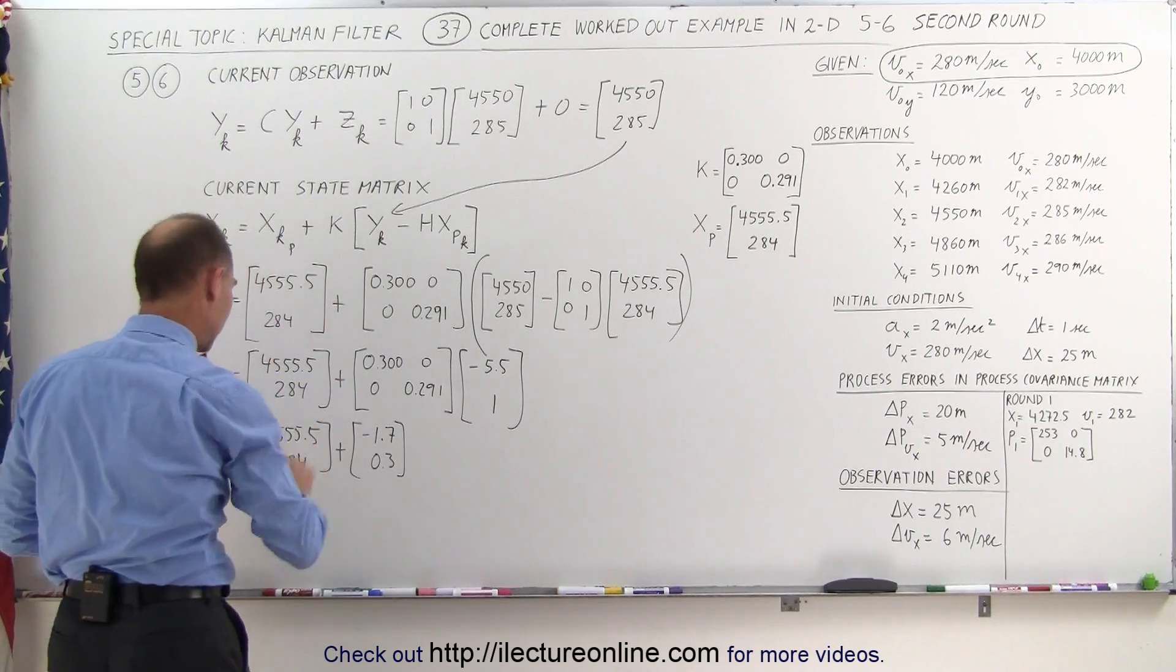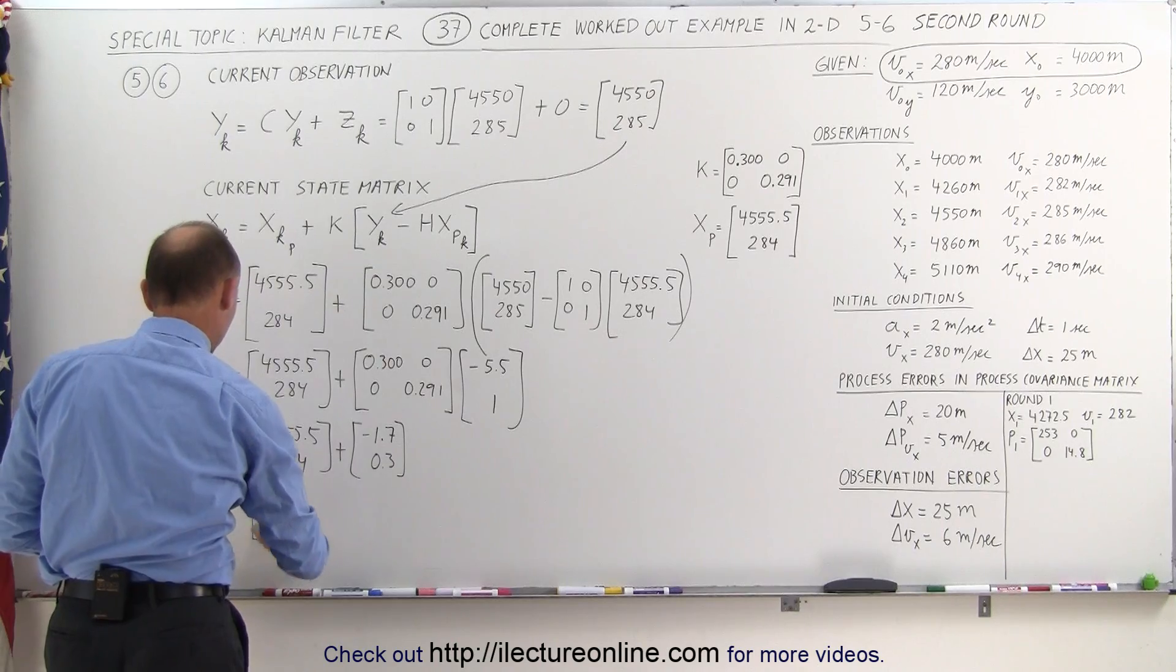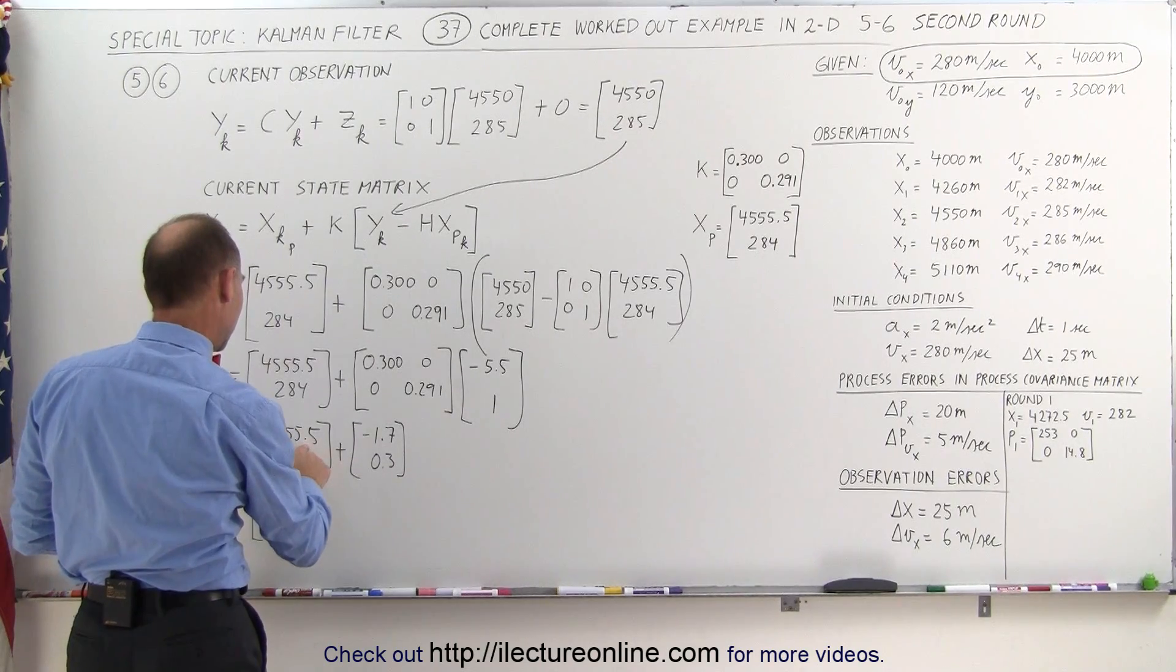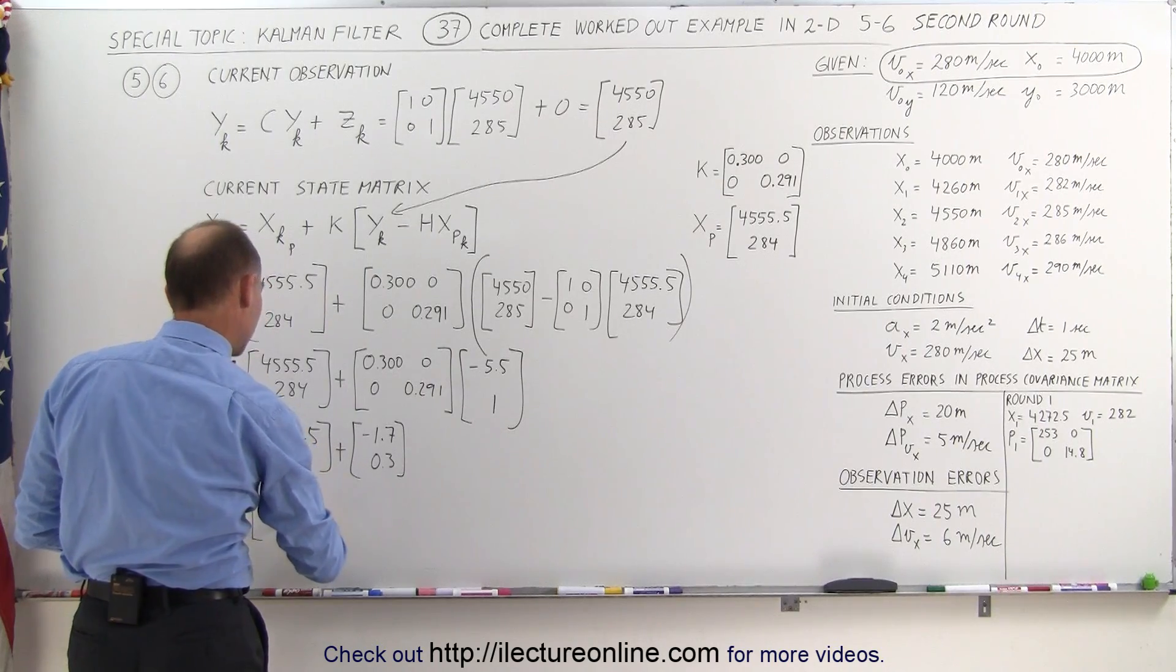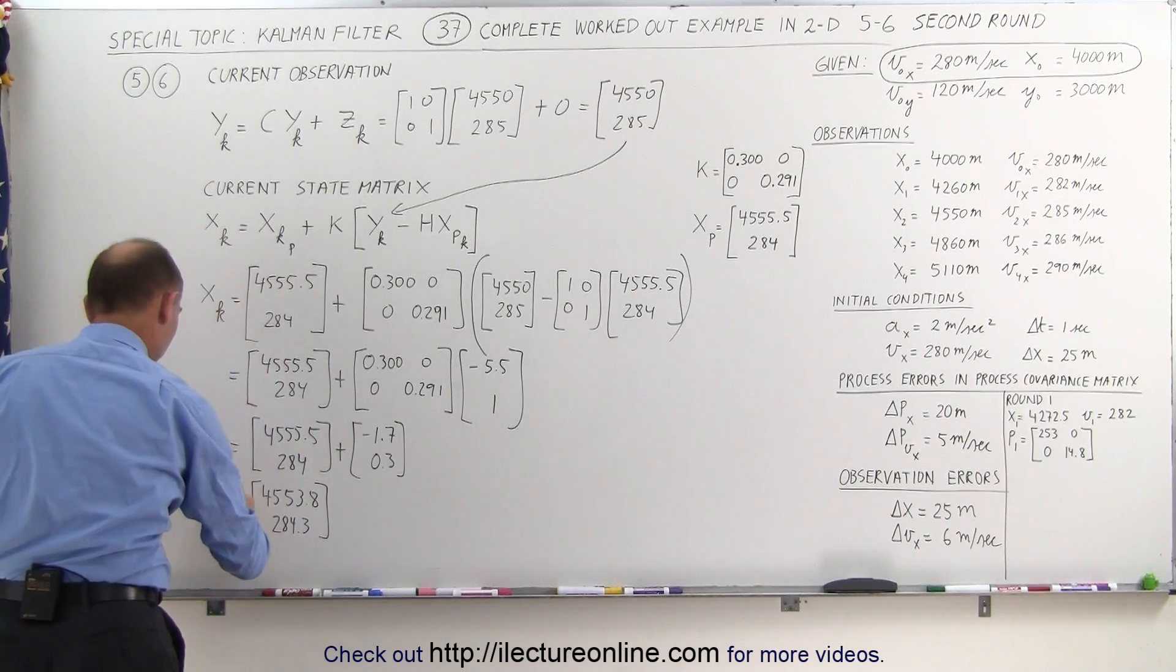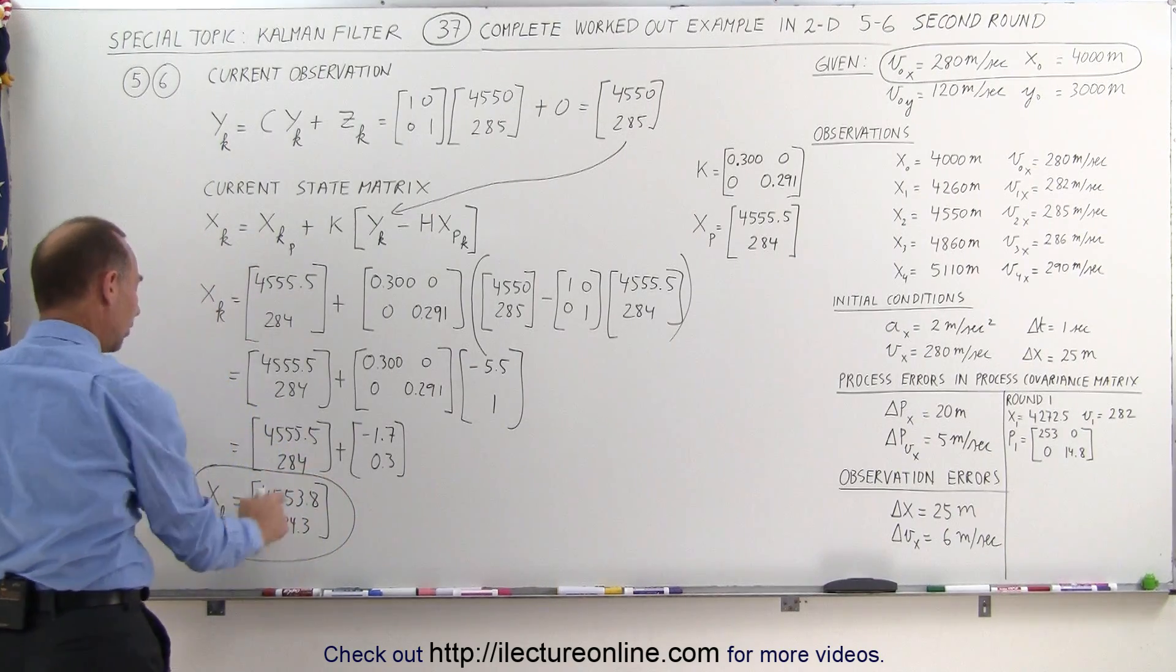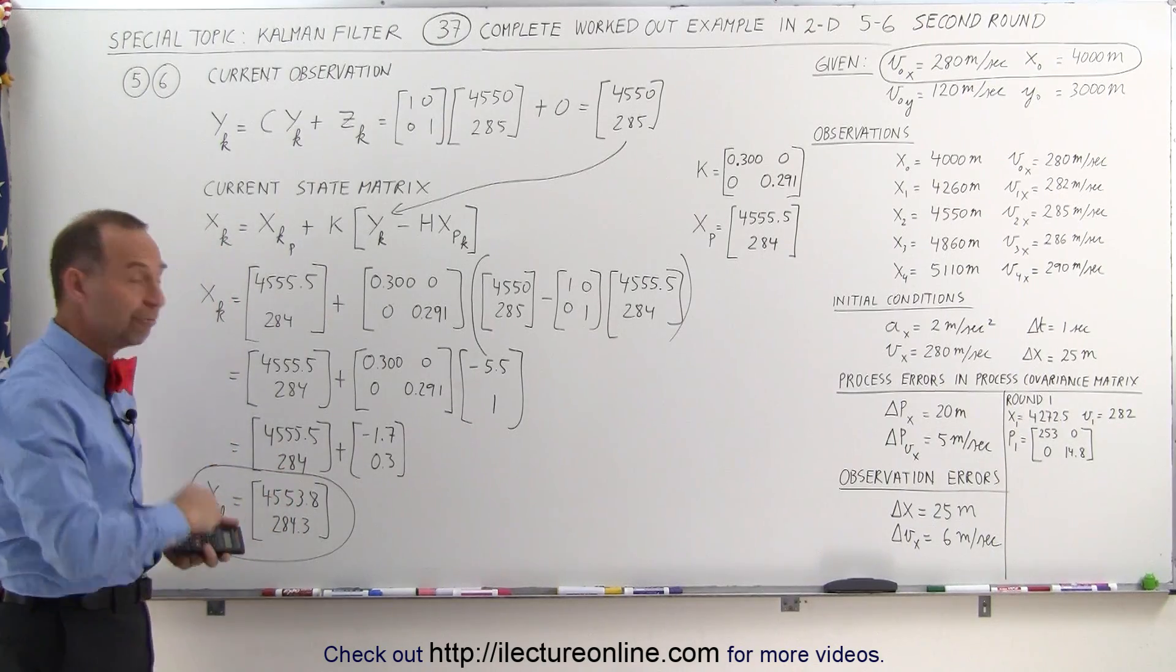And when we add this together, so now we can add this together, so we have to subtract 1.7 from this, this becomes 4553.8, and this becomes 284.3. Now, this is now our current state matrix. This is the adjusted position and velocity based on the Kalman gain method for round two.